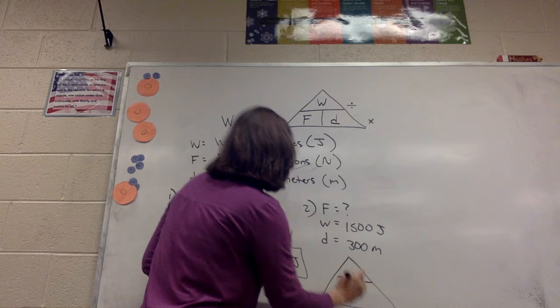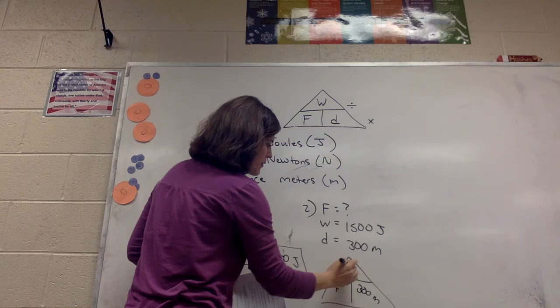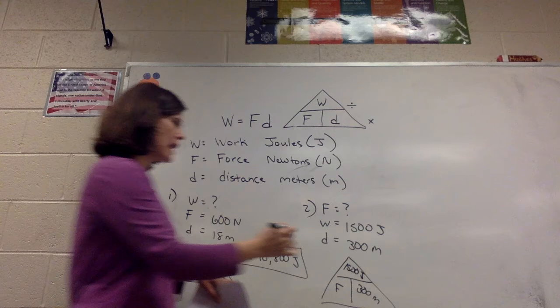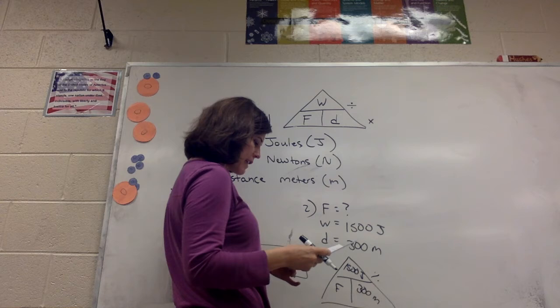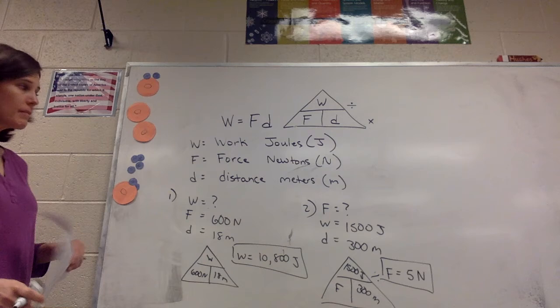So my force is what I'm solving for in this problem and my distance is going to be 300 meters and work which goes on top is going to be 1500 joules. So now I have one number on top of the other, that tells me I'm going to divide. So top divided by bottom, 1500 divided by 300, and my answer would be 5 newtons of force.